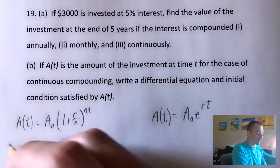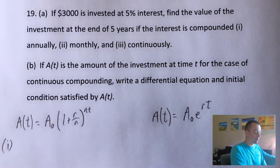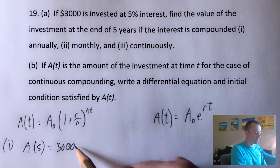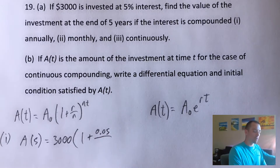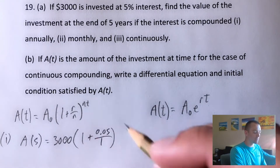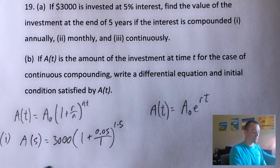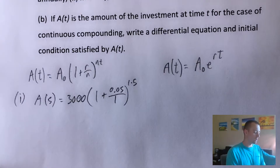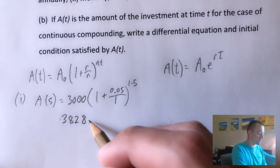For part one — compounded annually — we use that equation. After five years, T equals 5, A sub zero is $3,000, times one plus the interest rate 0.05 divided by N, which for annual compounding is 1, raised to the power of N times T, which is 1 times 5. Plugging this into a calculator, we find that after five years, compounded annually, the investment would be worth $3,828.84.